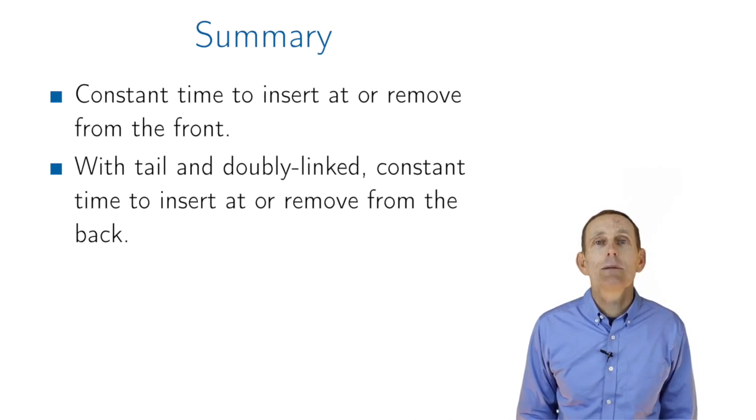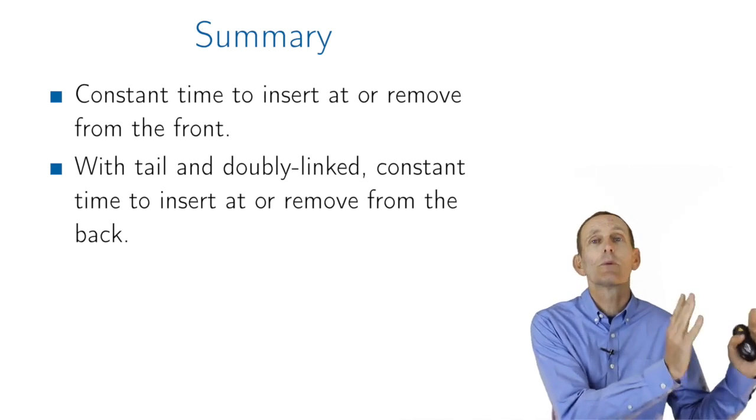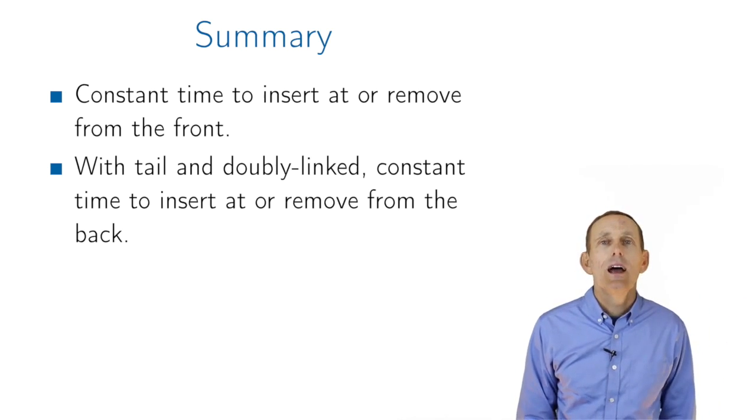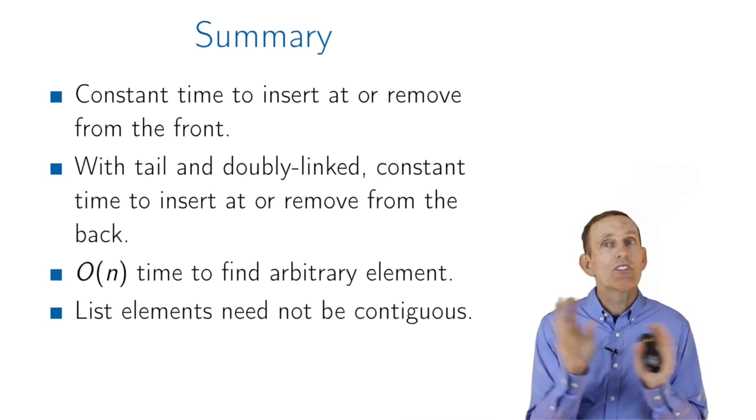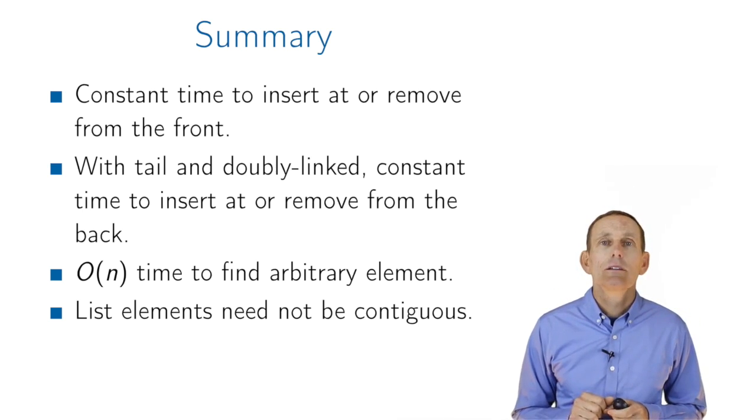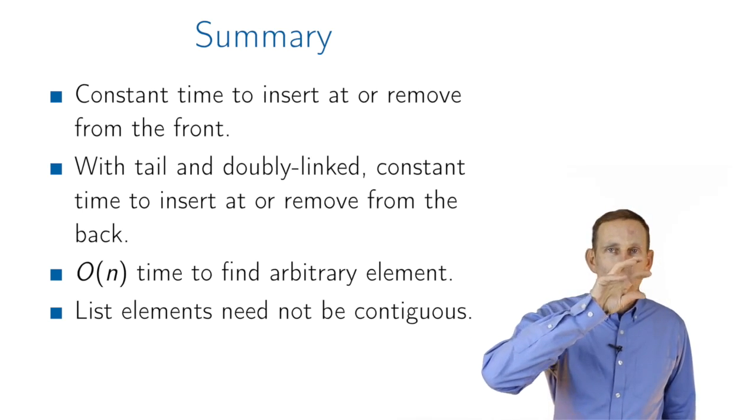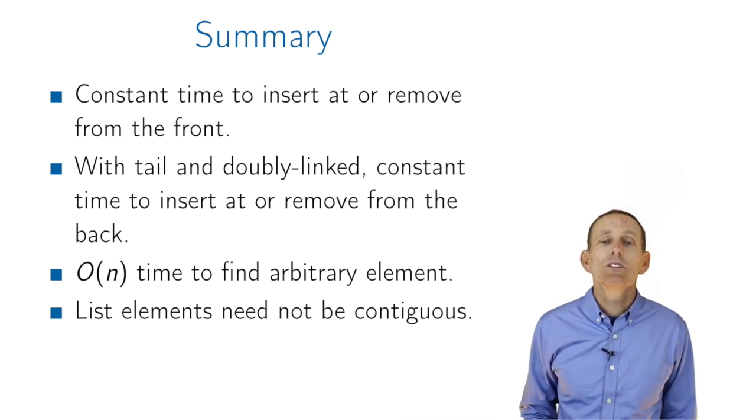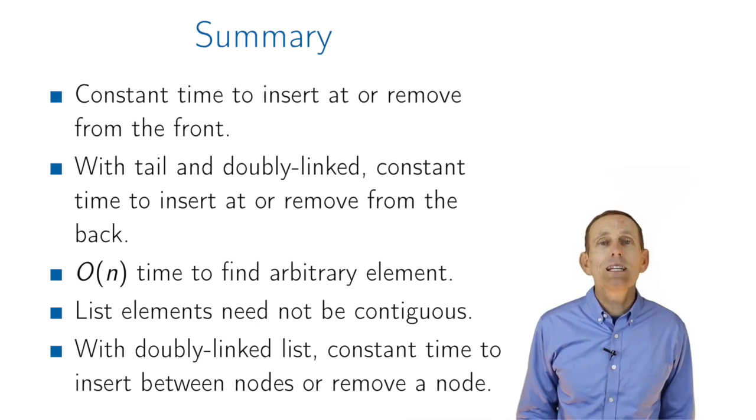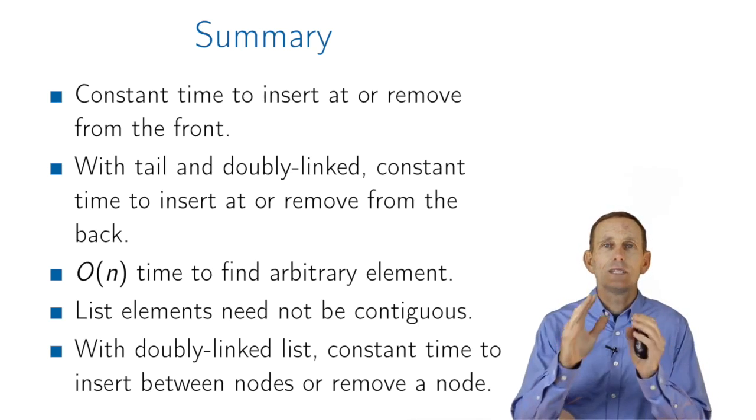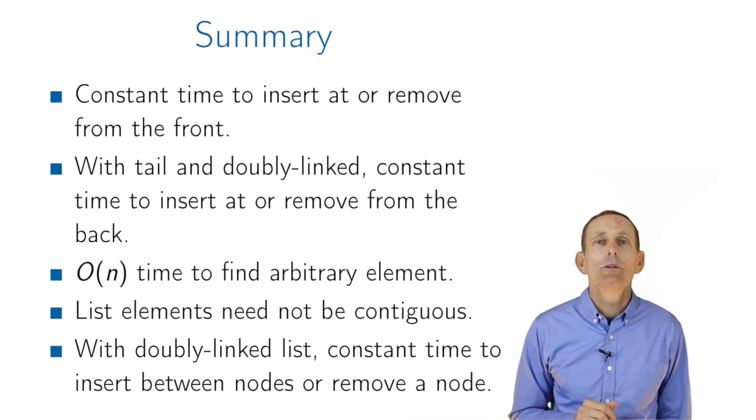If you have a tail and doubly linked, it's also constant time to work at the end of the list, so you can get, add, and remove from there. It's linear time to find an arbitrary element. The list elements are not contiguous, as they are in an array. You have separately allocated locations of memory, and then there are pointers between them. And with a doubly linked list, it's also constant time to insert between nodes or to remove a node.